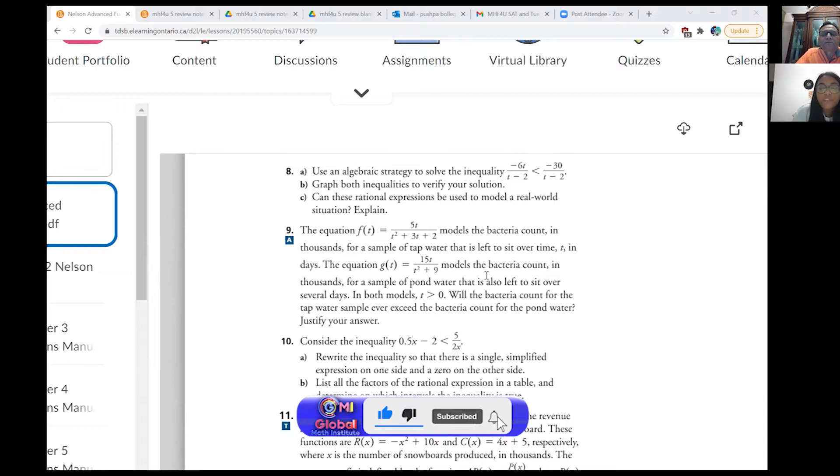The equation f(t) equals 5t over t squared plus 3t plus 2 models the bacteria count in thousands for a sample of tap water that is left to sit over time, t in days. The equation g(t) equals 5t over t squared plus 9 models the bacteria count in thousands for a sample of pond water that is also left to sit over several days. In both models, t is greater than 0. Will the bacteria count for the tap water sample ever exceed the bacteria count for the pond water? Justify your answer.